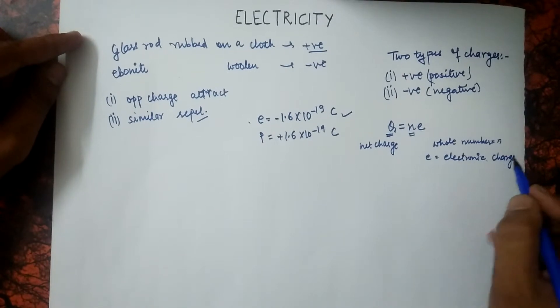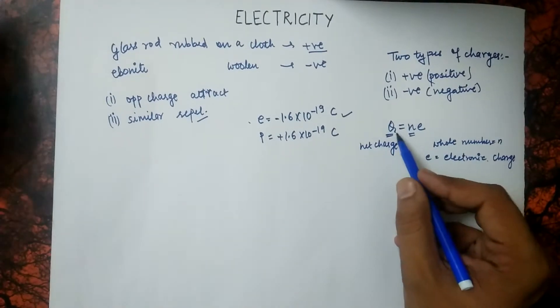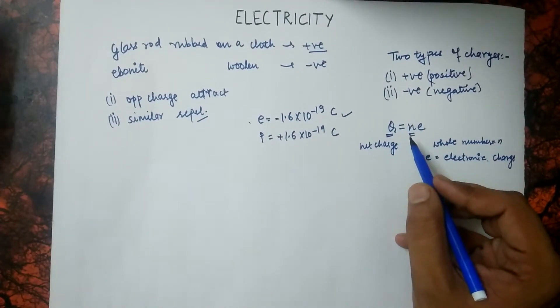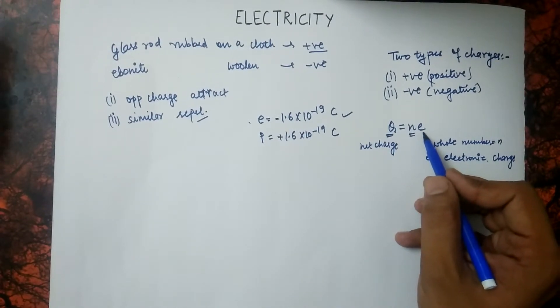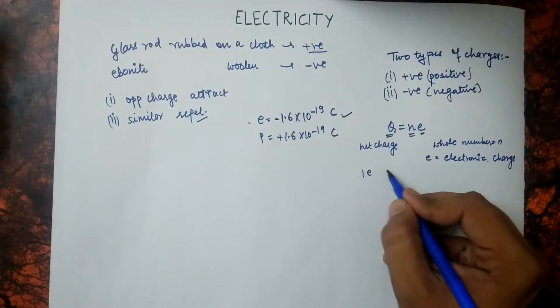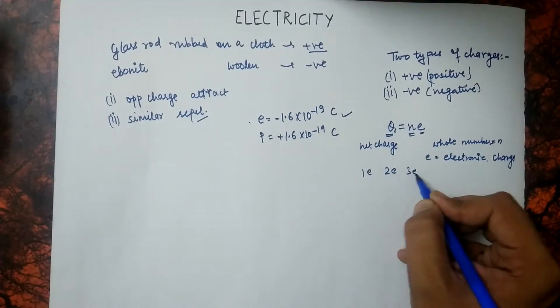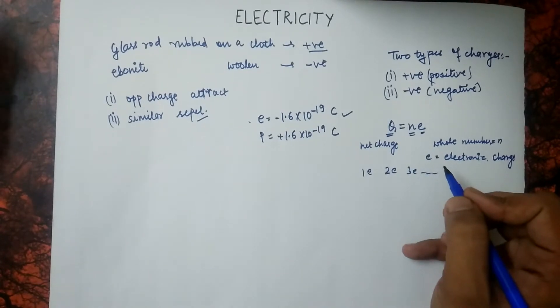This is actually based on quantization. That the charge occupied by a substance would be in terms of electronic charge. That it would be 1E, 2E, 3E and so on.